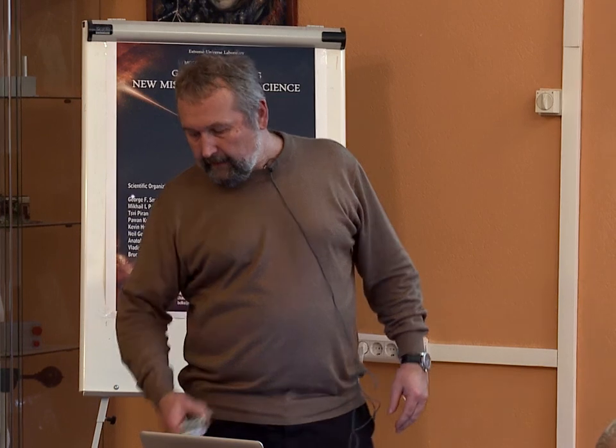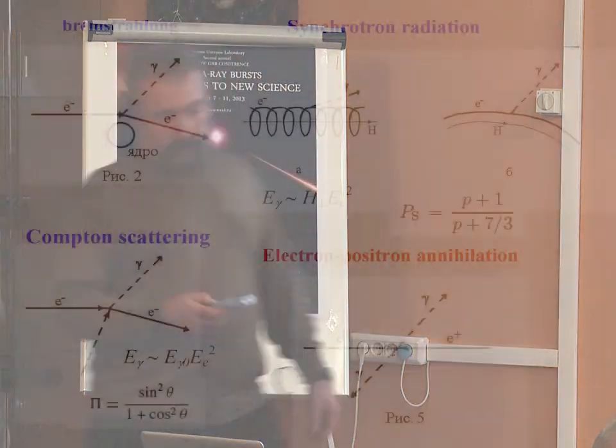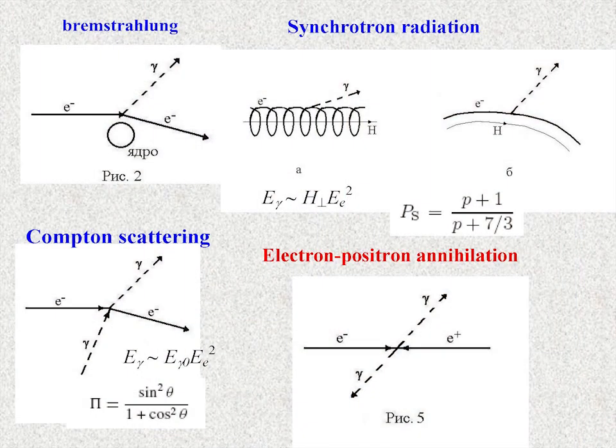Here are the main physical processes which could generate high-energy emission. There are well-known Bremsstrahlung, synchrotron radiation, Compton scattering, and electron-positron annihilation. All of them could produce polarized emission.